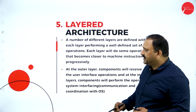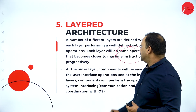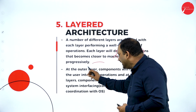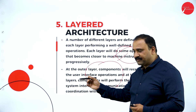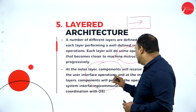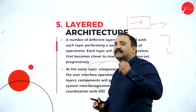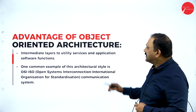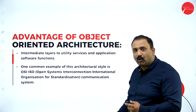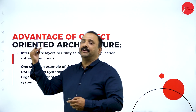The next one is layered architecture, which has multiple layers for each and every operation. Every layer will do some kind of operation, become closely related to the machine, and instructions will continue in a progressive manner. At the outer layer, components will receive the user interface — the consumer can start putting in data. Components inside take the data one by one so that communication and coordination are handled step by step. The architectural flow is well-connected, allowing you to move forward from one point to another.